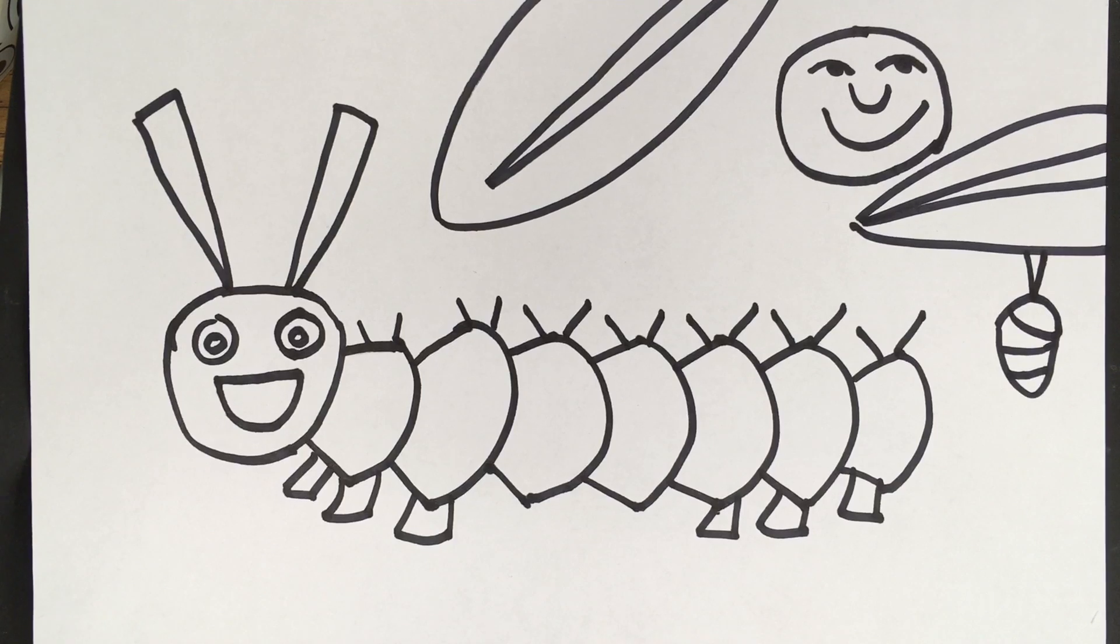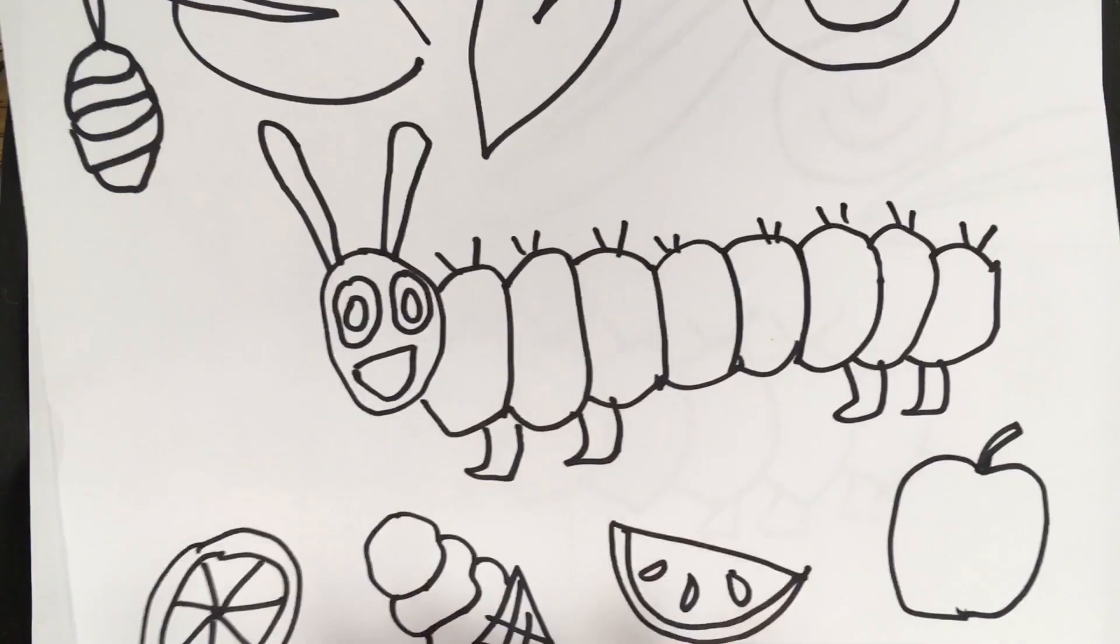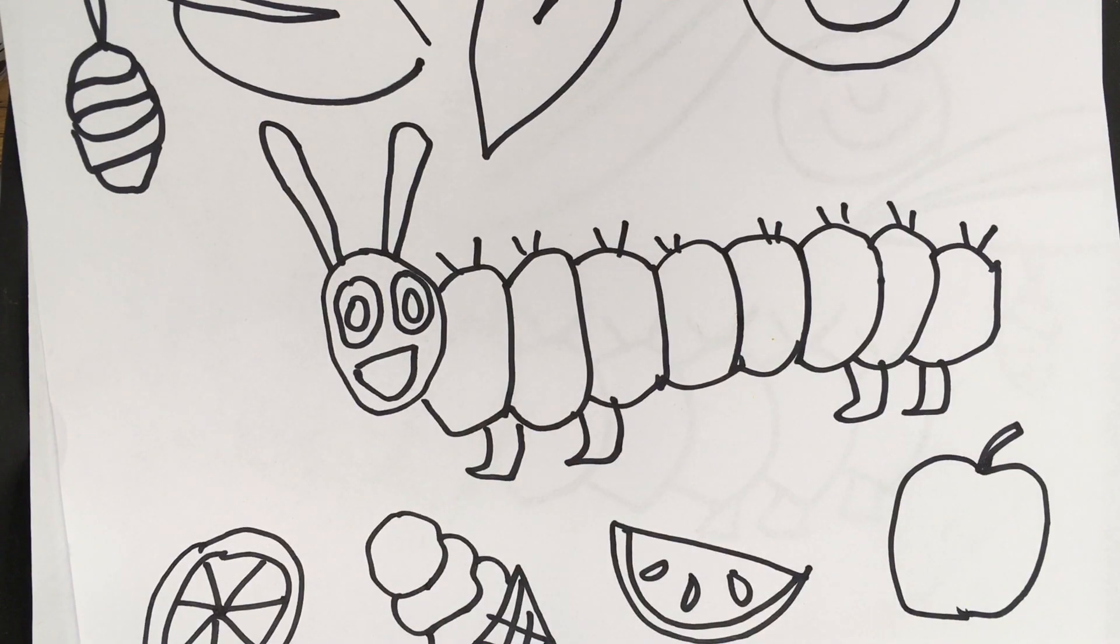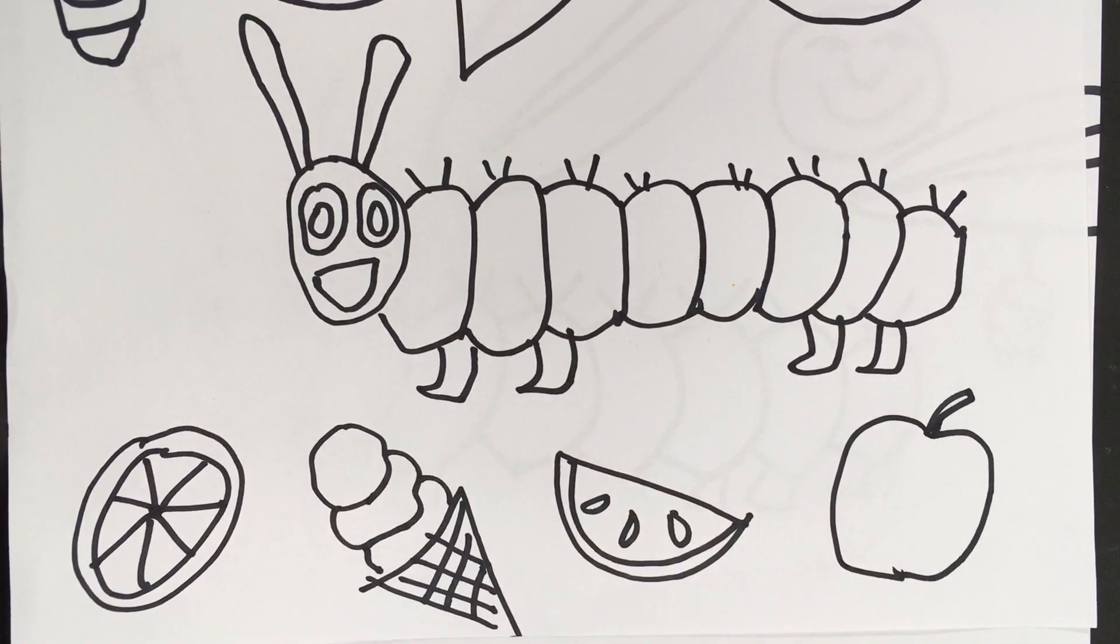The hungry caterpillar ate a lot of things. I think he even ate salami, cake. I have oranges and apples and ice cream and watermelon. But from the story, remember all the things he ate. I was so surprised at all the things he ate. You have fun finishing your hungry caterpillar. And go ahead and let me know how yours came out in the comments.